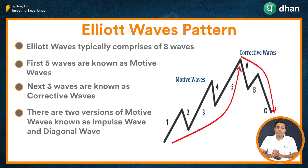Also, there are two variations of motive waves known as the impulse wave and diagonal wave, which we have also covered in the previous videos. In this video, we will dwell more upon the corrective wave and the various structures that can be seen in corrective waves.